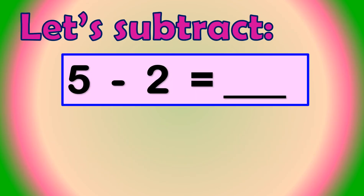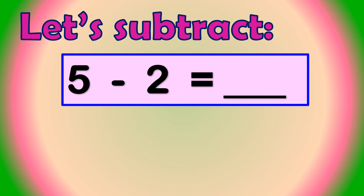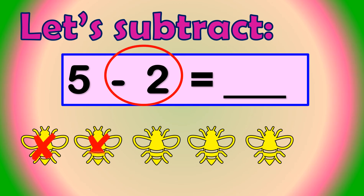Let's subtract 5 minus 2. Minus 2 means take away 2 or remove 2. We can solve this by using objects or pictures. From these 5 flies, we'll take away 2. So we cross out 2 flies: 1, 2.